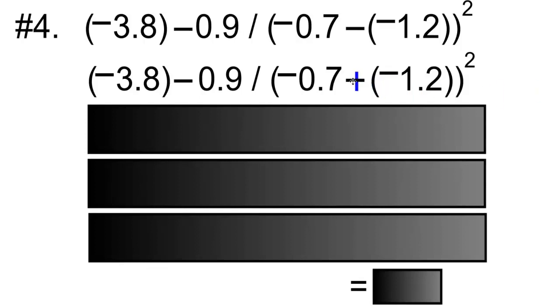Since the 1.2 and the negative 0.7 have different signs, we'll subtract. So 1.2 minus 0.7 is going to be 0.5. We'll keep it positive because the 1.2 is positive.